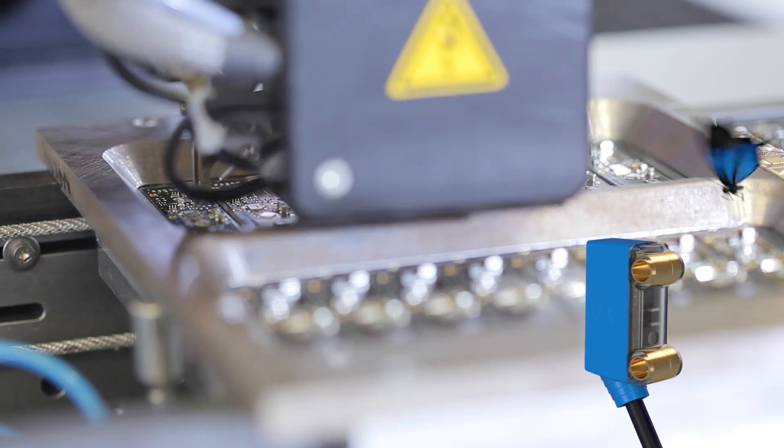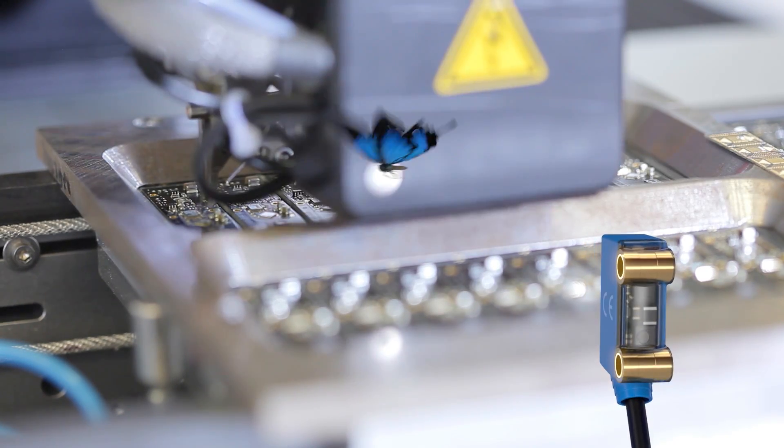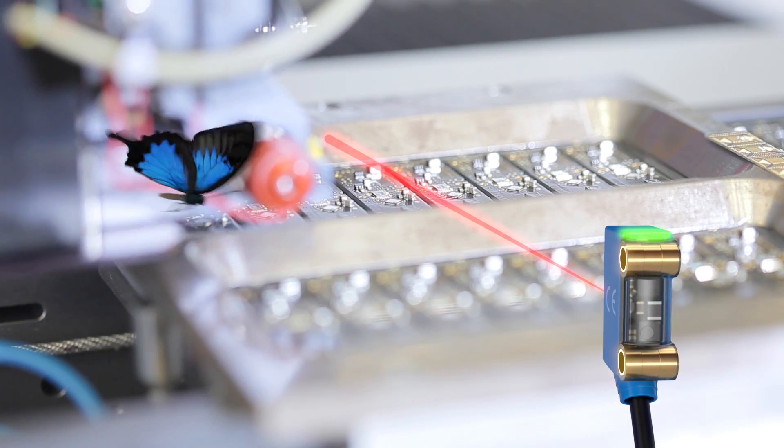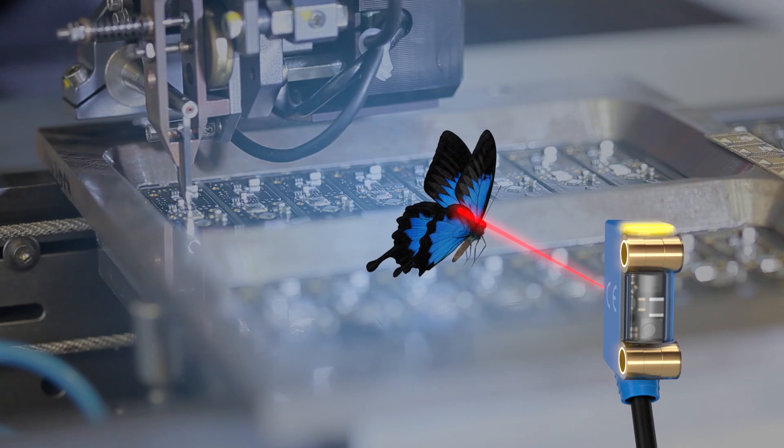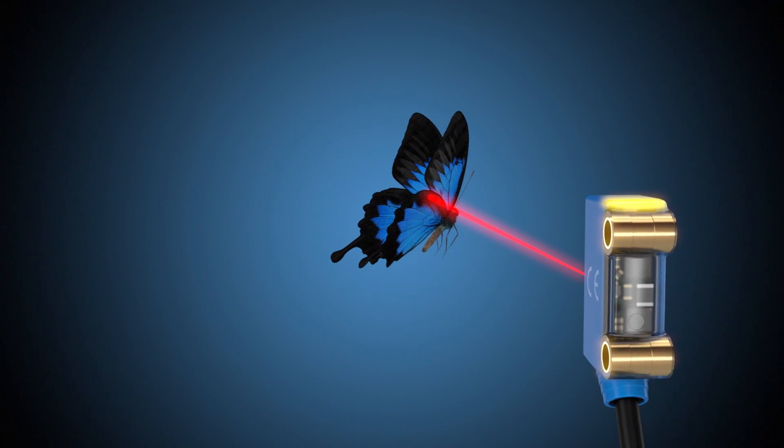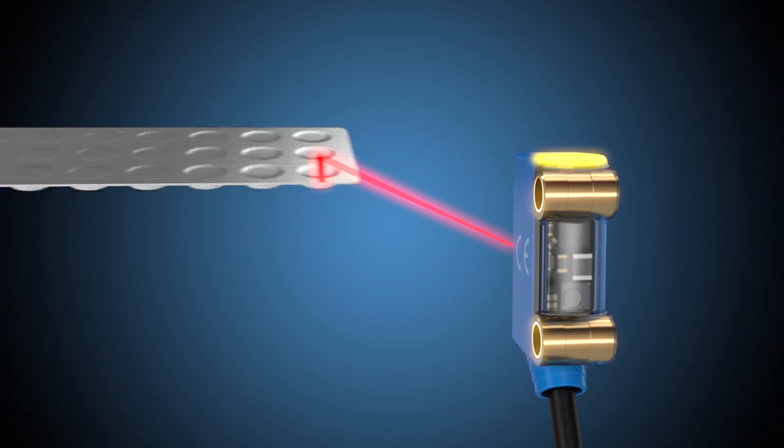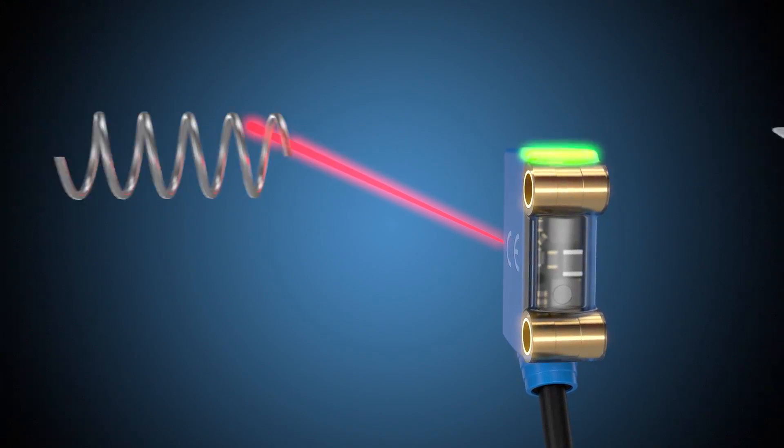But even this butterfly wouldn't be able to flutter past our ultra-small W2-S2 undetected. Why? Because they detect even the deepest shades of black, enabling them to identify objects of any kind, even if these are reflective or exceptionally thin.